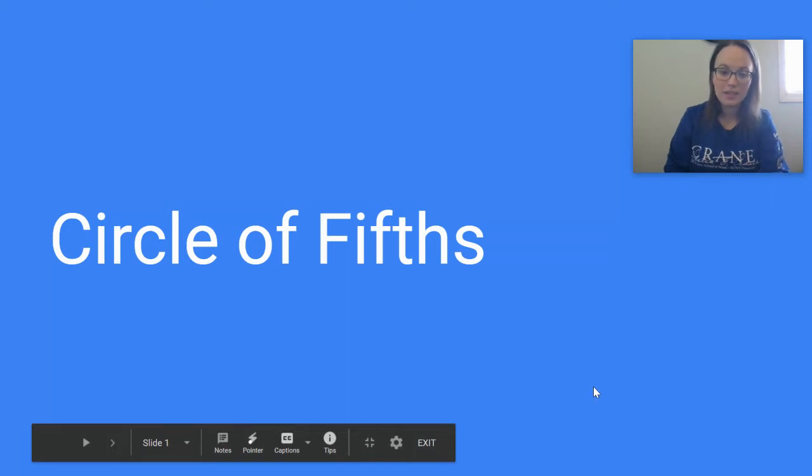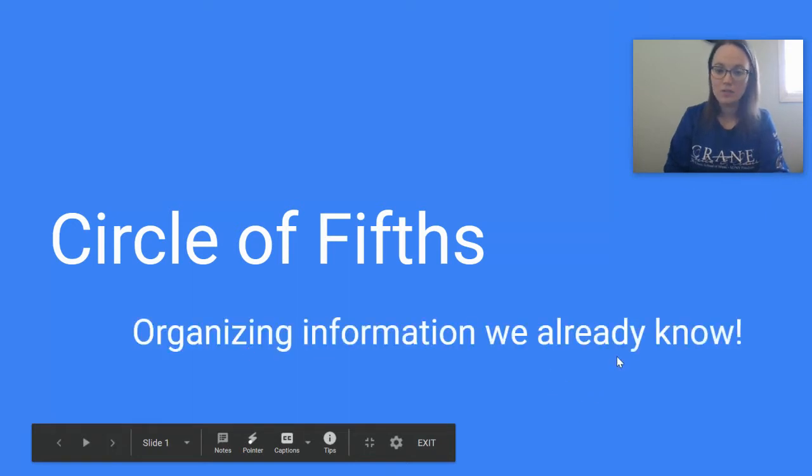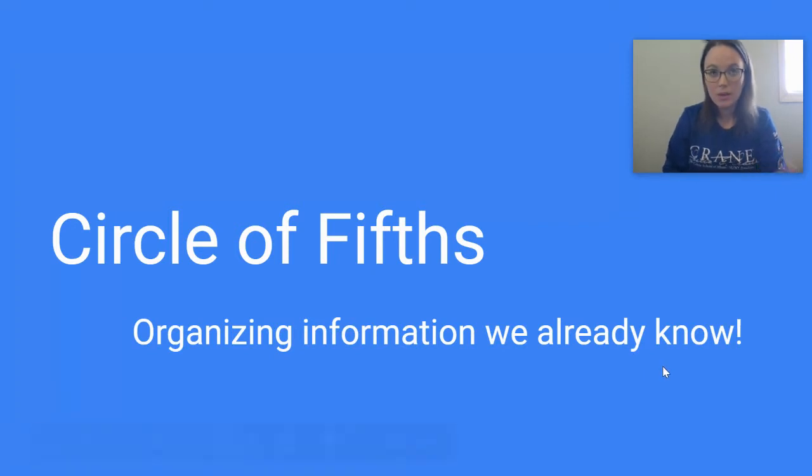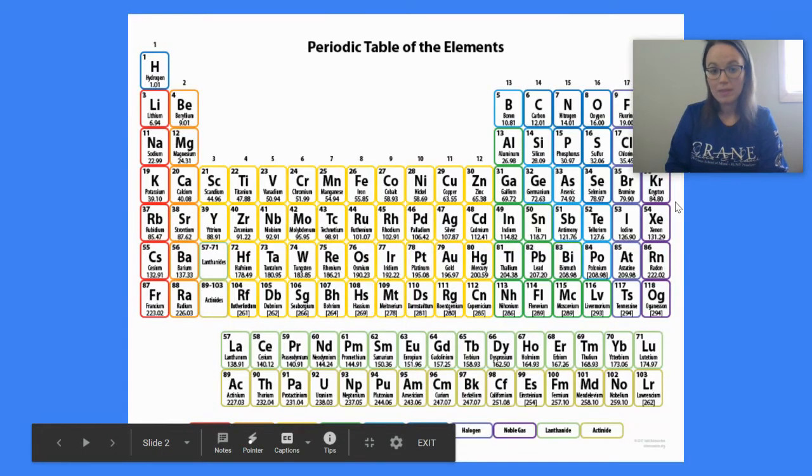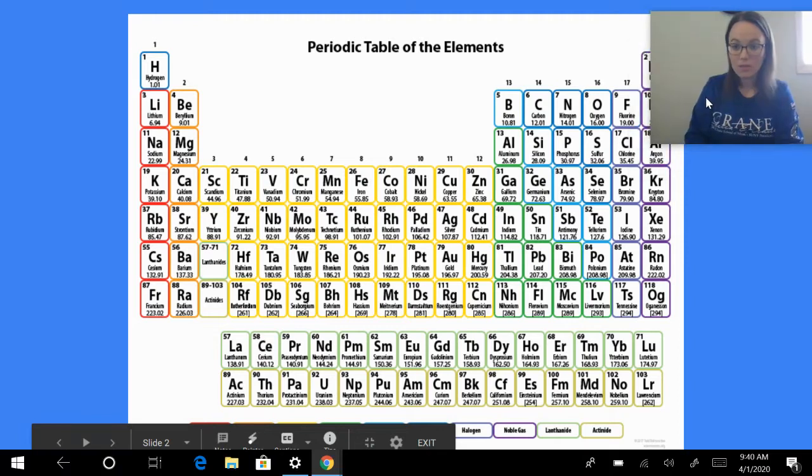The most important thing I want you to walk away with today is that the circle of fifths is a way of organizing information that we already know. It reminds me of another tool that is used to organize information, the periodic table.